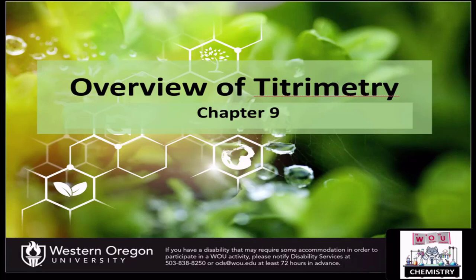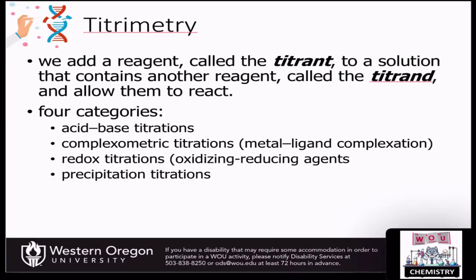This week in analytical chemistry, we want to shift our attention to titrimetry. When we're doing titrations, we're going to add a reagent called the titrant to another solution that contains another reagent, and they'll react in a chemical reaction. There are four main categories of titration: acid-base titrations, complexometric titrations — which are usually metal-ligand complexation reactions — redox titrations with oxidizing and reducing agents, and precipitation titrations.